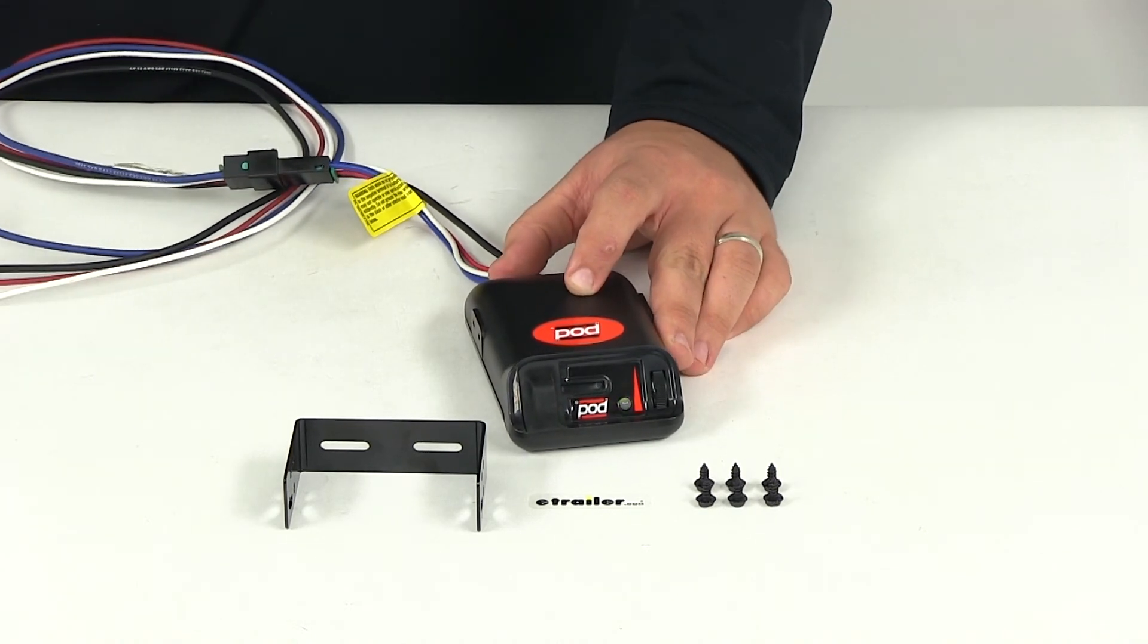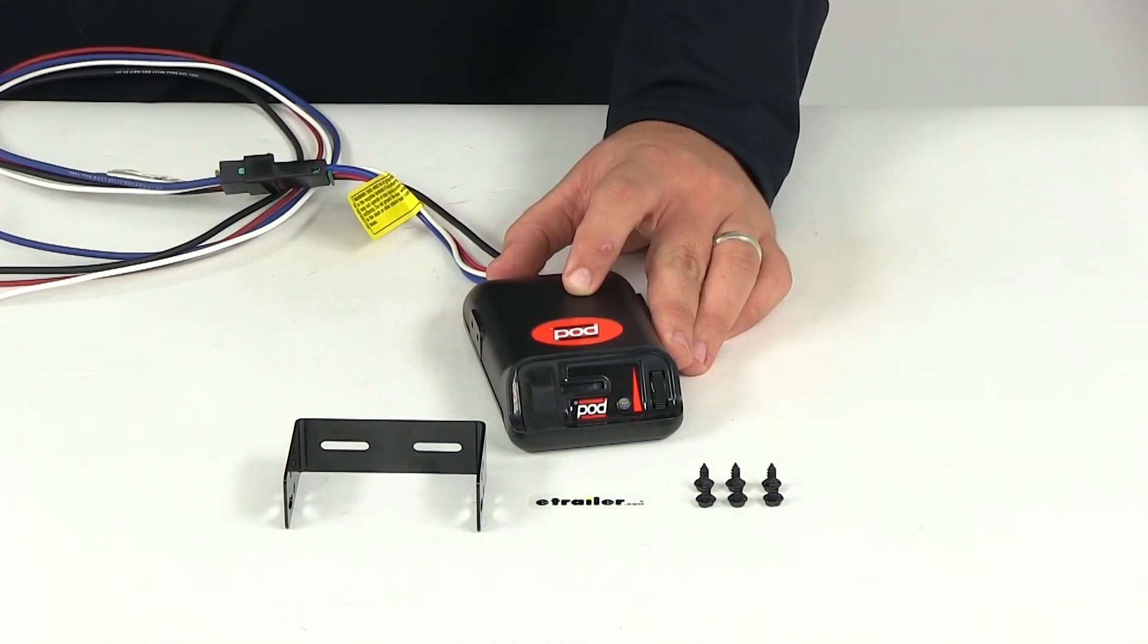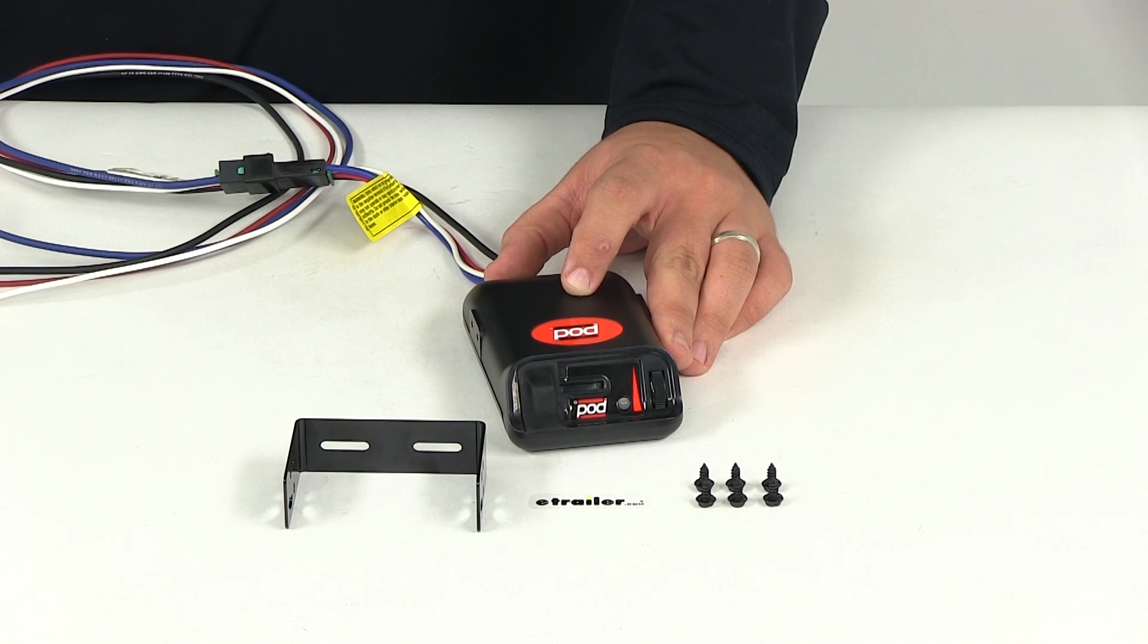That's going to do it for today's review of part number 39523. This is the Pro Series Powertrek Electronic Brake Controller.